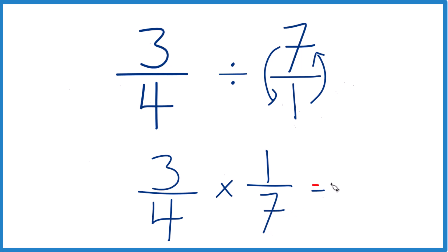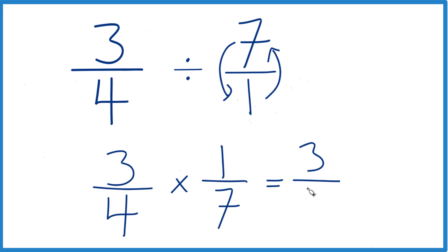Now with fractions, we multiply the numerators, three times one, that's three. And then the denominators, four times seven, that's twenty-eight.